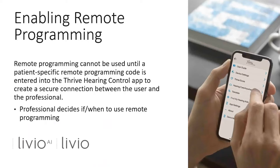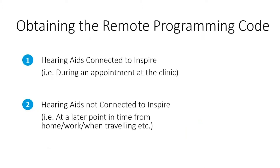Once this connection is made, the patient can then send requests for adjustment to the clinician, and the clinician can respond to these requests with new settings for the patient to try. This code only has to be generated once. There are two ways that we can generate a remote programming code: the first is during an appointment such as the initial fitting or review appointment in the clinic, and the second is remotely.